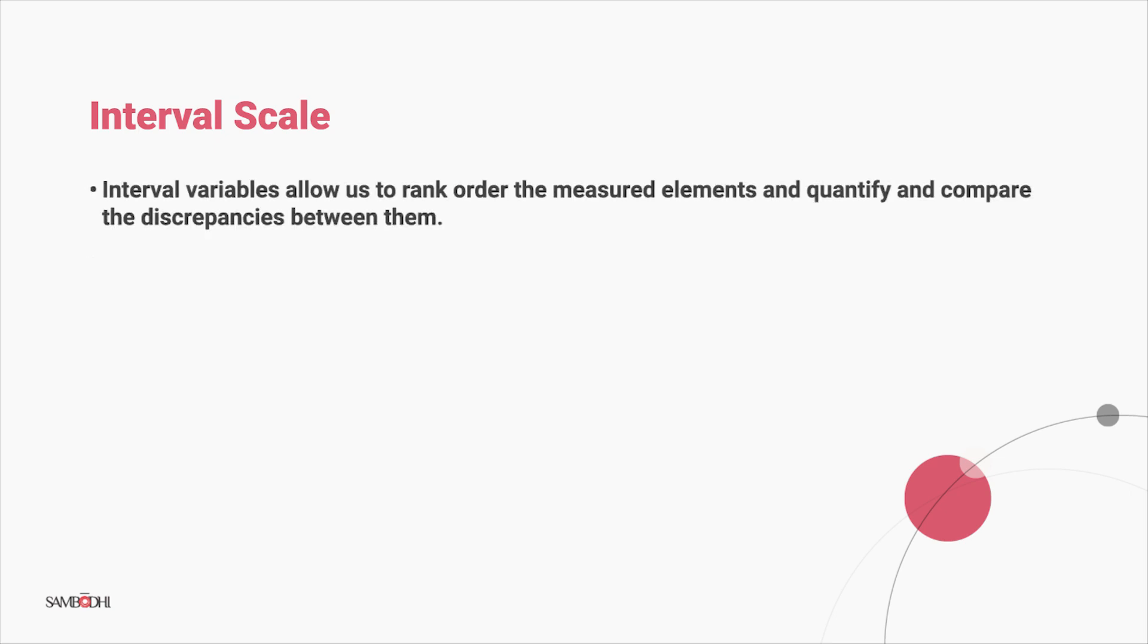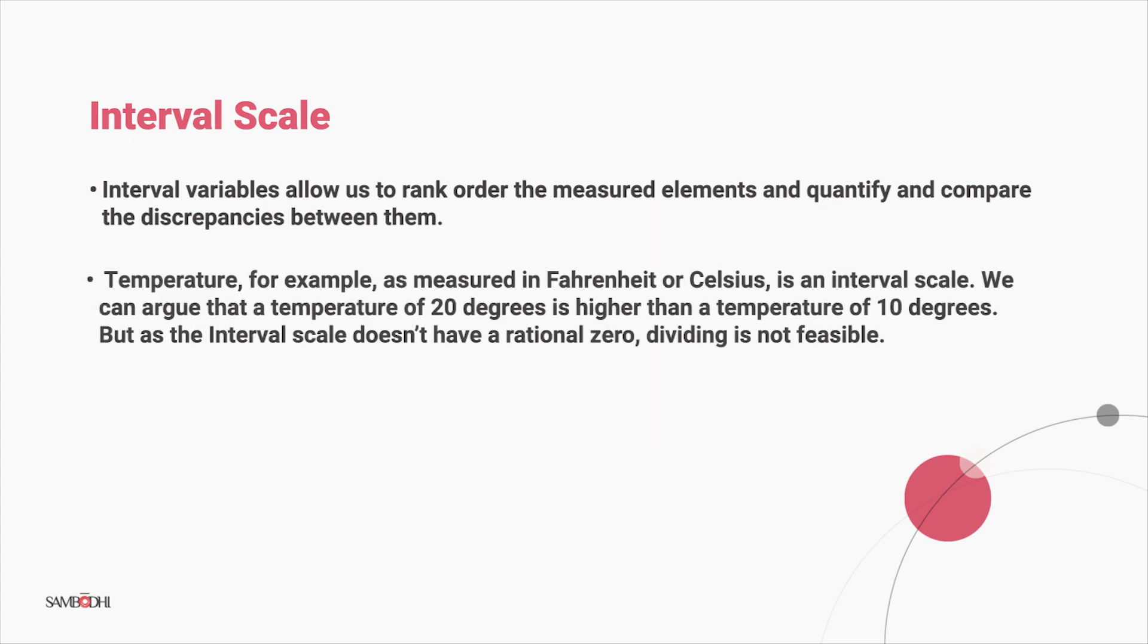Interval variables allow us to rank order the measured elements and also quantify and compare the amounts of discrepancies between them. Temperature, for example, as measured in Fahrenheit or Celsius, is an interval scale. We can argue that a temperature of 20 degrees is higher than a temperature of 10 degrees. But, as the interval scale doesn't have a rational zero, dividing is not feasible.